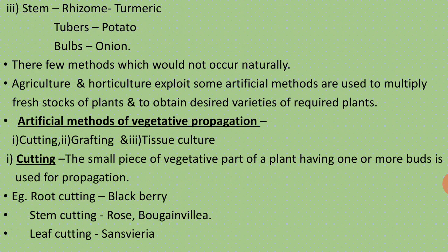For stem, stems are used for several types: rhizomes as in turmeric, tuberous stems as in potato. Bulbs are also used for propagation.